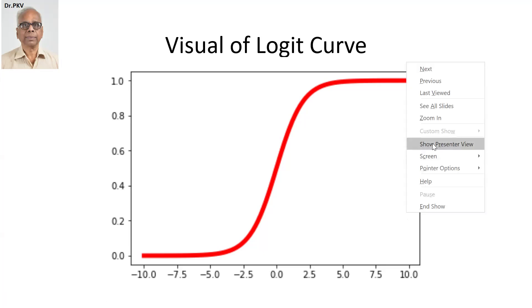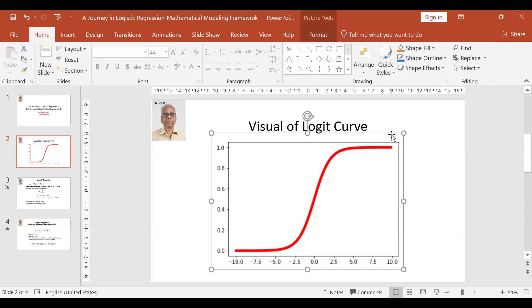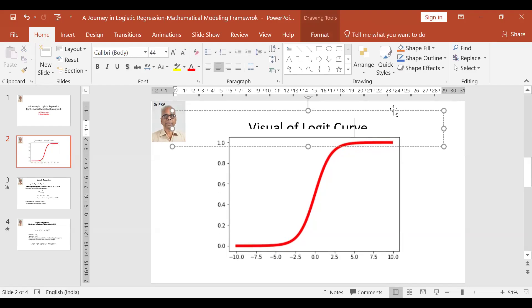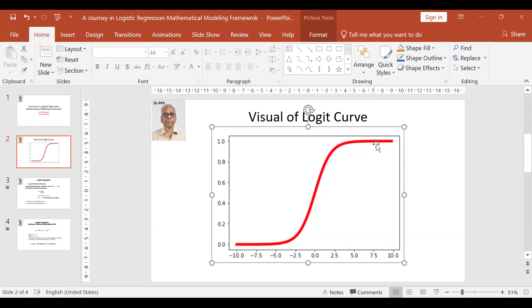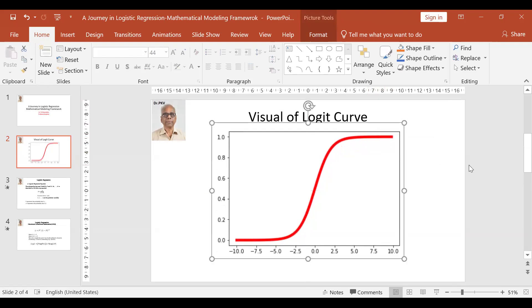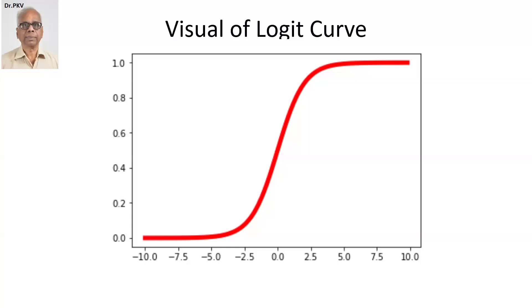The sigmoid function is given by a mathematical equation, which is the next slide. But look at the curve. It goes here, reaches the highest and then tapers off and plateau. So, it guarantees probability, which is the vertical axis, to remain between 0 and 1. So, what is this sigmoid function?